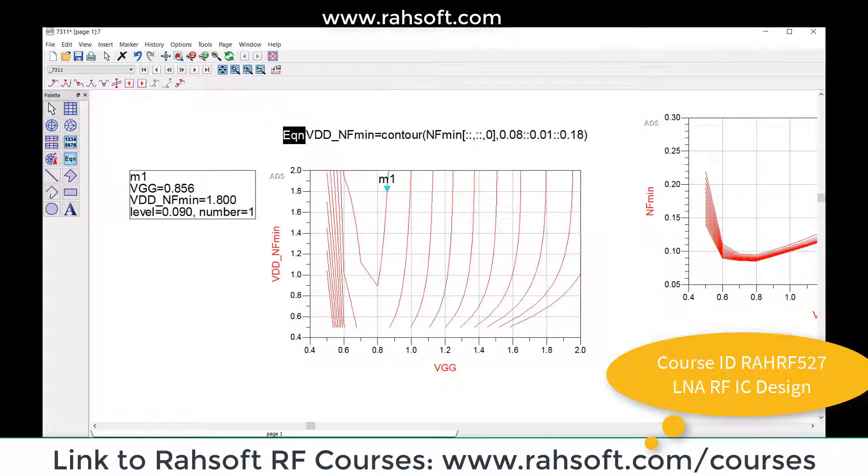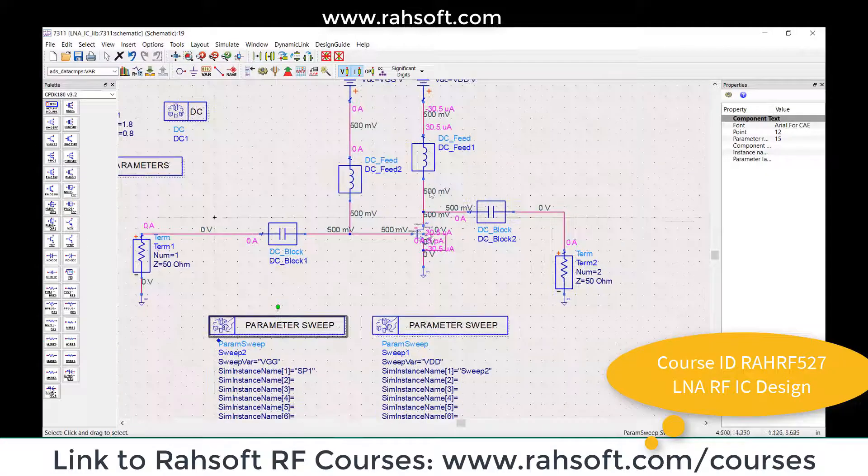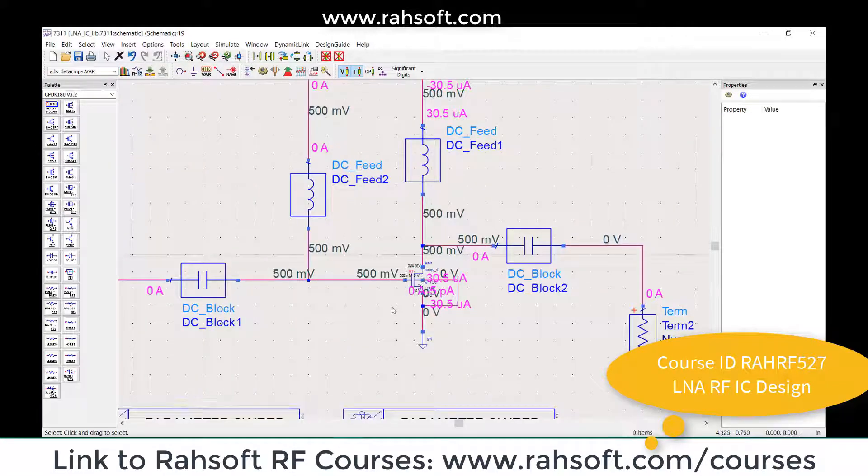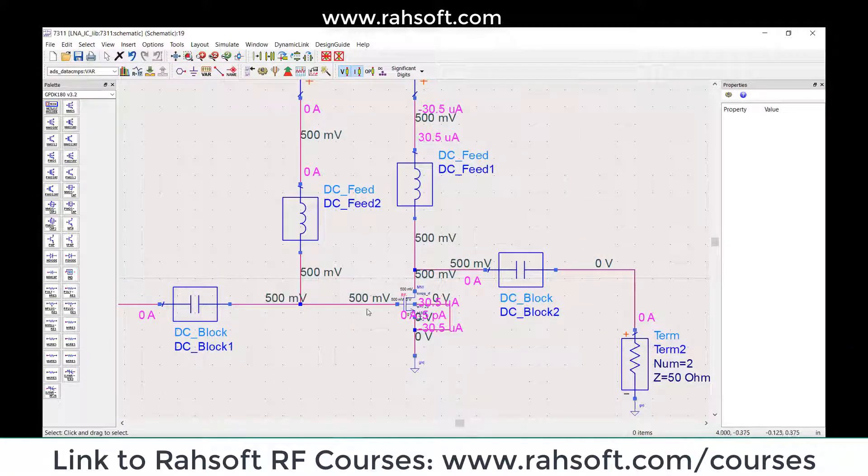You also have to think about your breakdown voltage, because if this transistor has a breakdown voltage of 2 volts, and this is 0.8 and this is 1.8, it's fine because the gate-drain DC voltage is around 1 volt, which is okay for us.